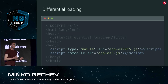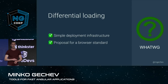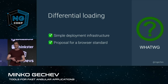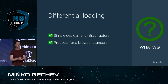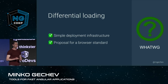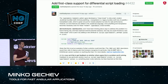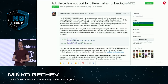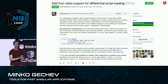So why did we choose differential loading instead of doing some magic on the server? Well, first of all, it simplifies deployment a lot. The browser makes the decision which bundle to download, so we don't have to couple our server with complicated logic related to parsing the user agent. On top of that, there is a proposal which aims to make differential loading a first-class citizen in modern browsers, though this is still very early stage and may not ever get standardized. But it's exciting to see people working in this direction.